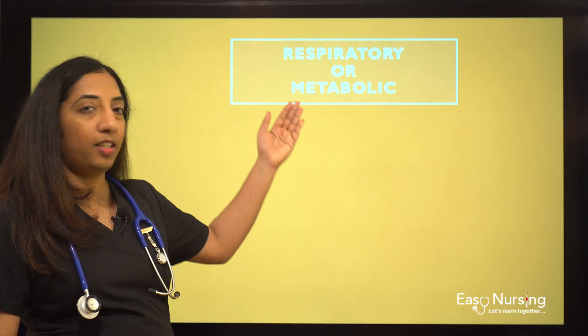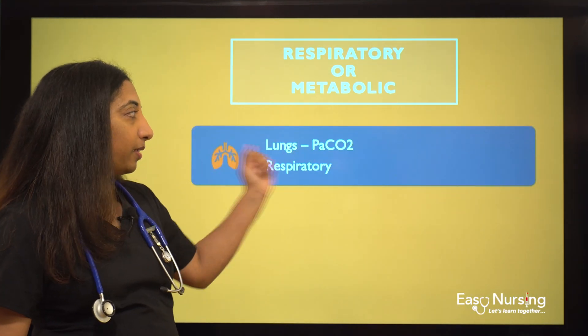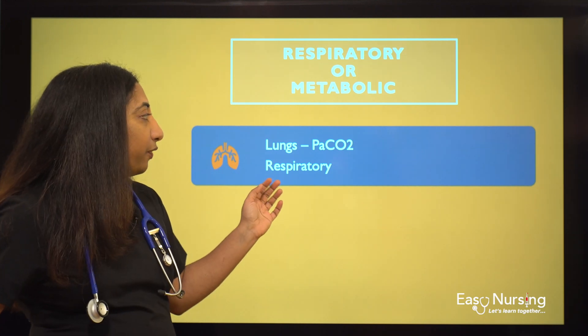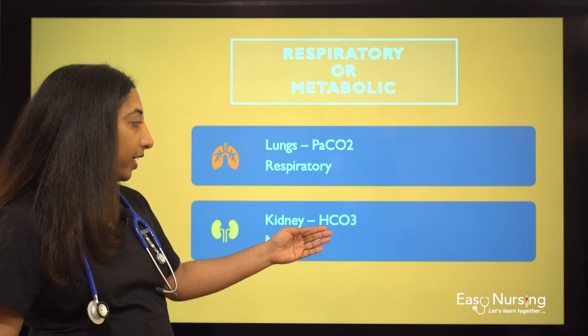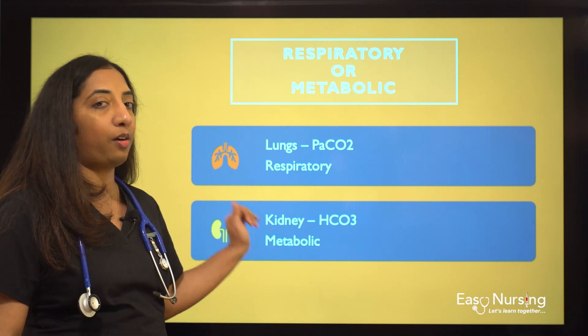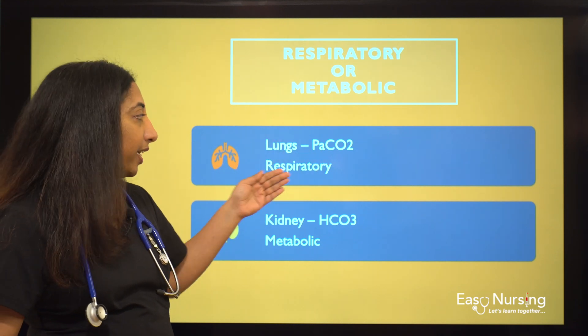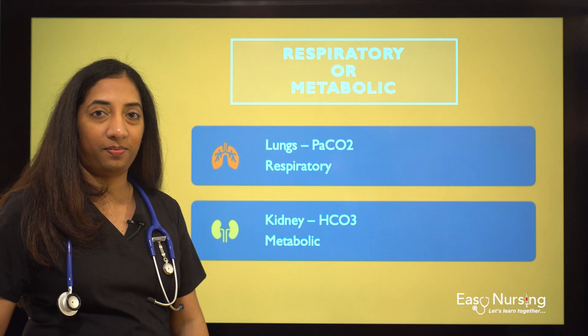For the second step — determining if it is respiratory or metabolic — if it is respiratory, the PaCO2 will be abnormal, and if it is metabolic it will be the bicarb. So bicarb is related to metabolic or the kidney, and PaCO2 is related to respiratory or the lungs.